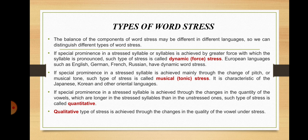Now we'll consider types of word stress. The balance of the components of word stress may be different in different languages, so we can distinguish different types. If special prominence in a stressed syllable is achieved by greater force with which the syllable is pronounced, such type of stress is called dynamic or force stress. European languages such as English, German, French, and Russian have dynamic word stress.